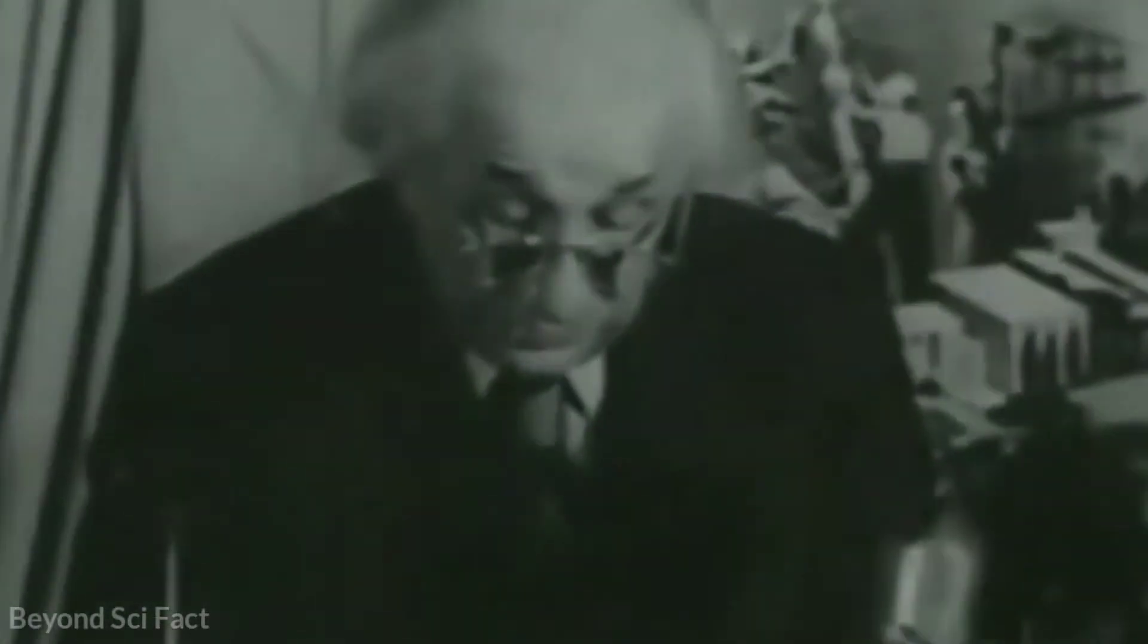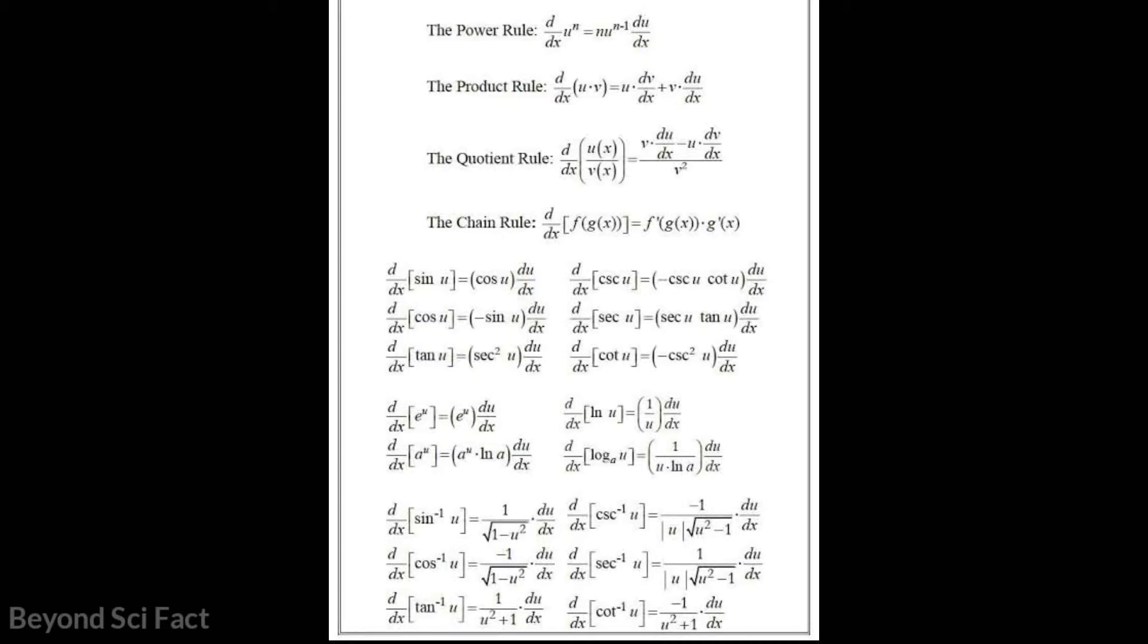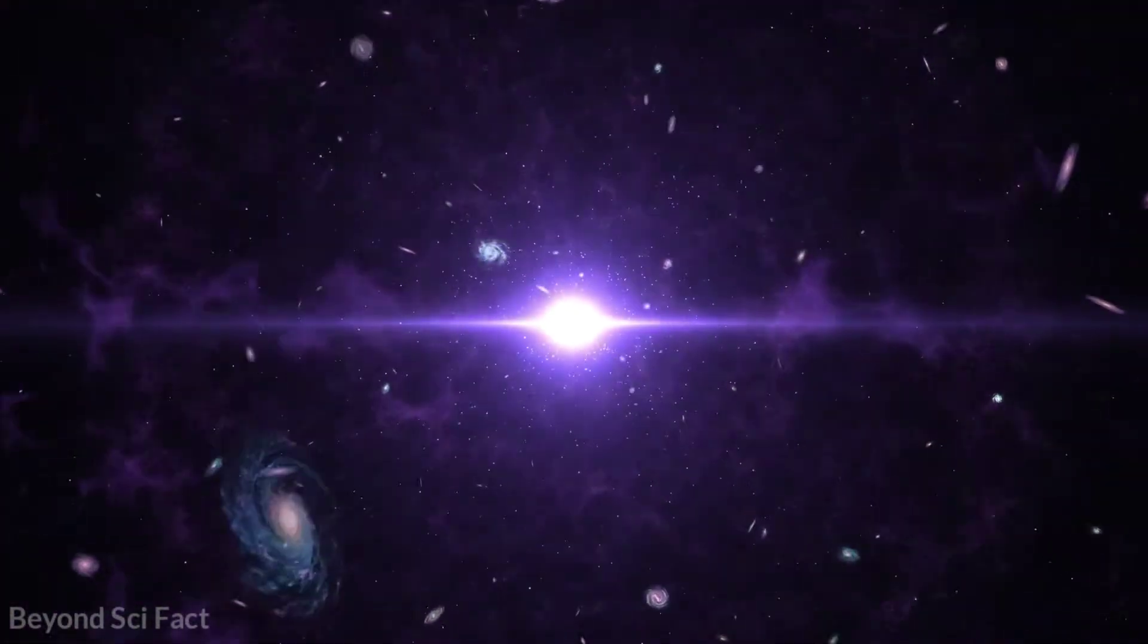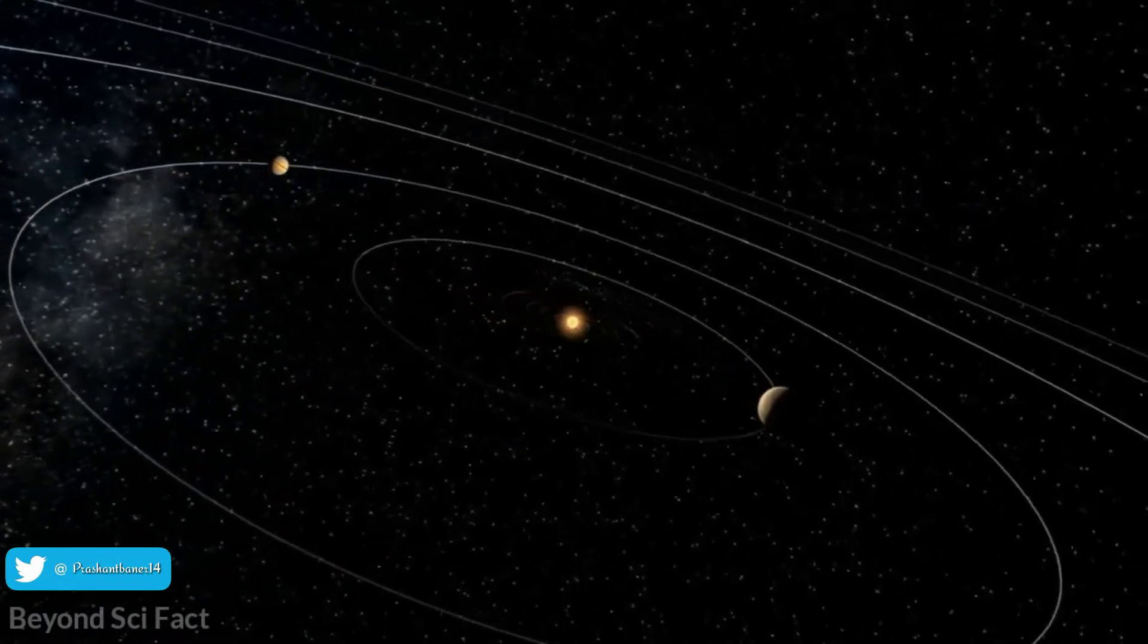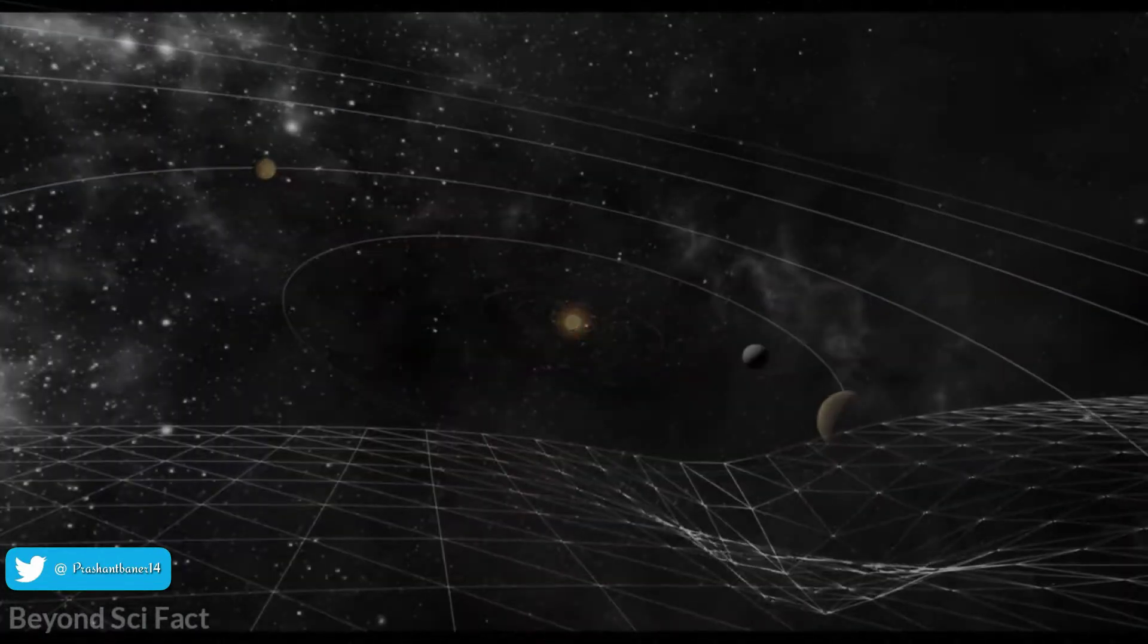But what was the need that Einstein had to use the cosmological constant? Actually, he was trying to solve the differential equation that describes spacetime. Thus Einstein needed to add a constant term to avoid having the universe collapse upon itself. This term balances the attractive force of gravity contributed by all matter in the universe.